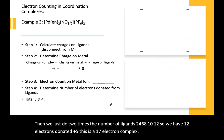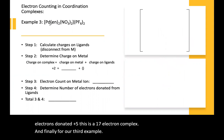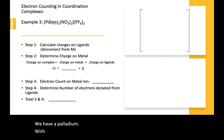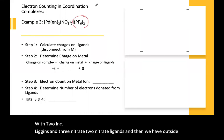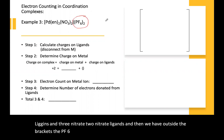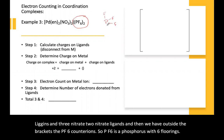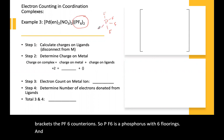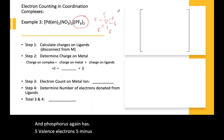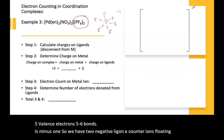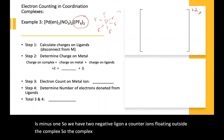For our third example, we have a palladium with two ethylenediamine ligands and two nitrate ligands, and outside the brackets we have PF₆ counter ions. PF₆ is a phosphorus with six fluorines. Phosphorus has five valence electrons; five minus six bonds is minus one. So we have two negative counter ions floating outside the complex, meaning the complex inside must have an overall plus two charge.